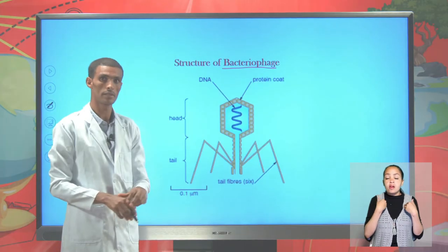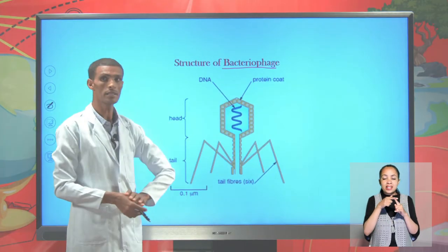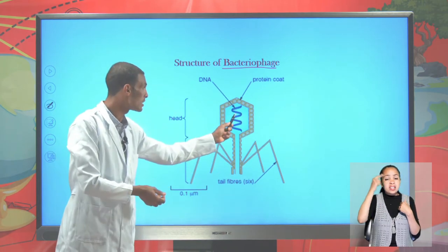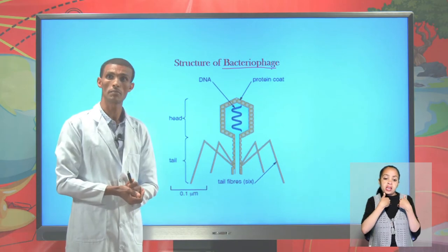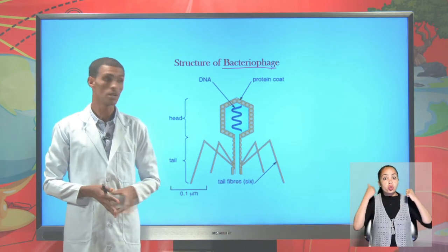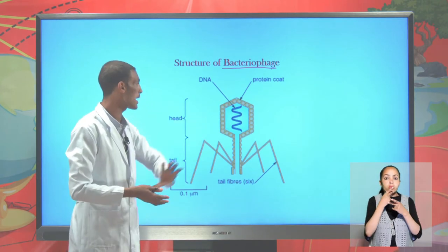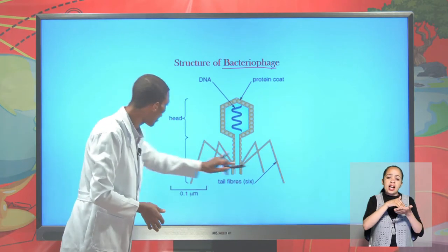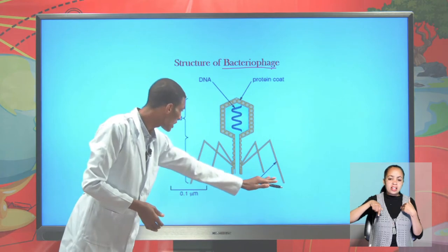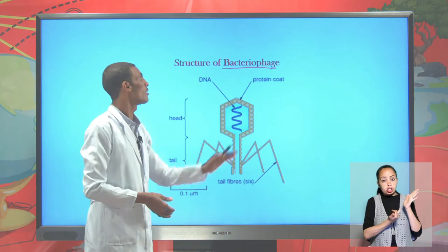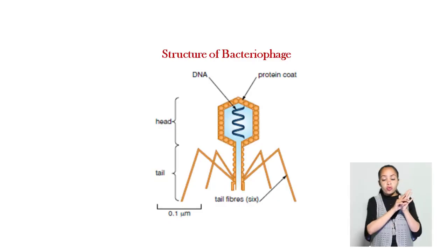Bacteriophage can have two sides. There is a head region and a tail region. Over the tail region it contains genetic material, and there is also a protein coat. There are tail fibers — about six fibers can be found here. This is the structure of a bacteriophage, or a virus that infects bacteria. It is a highly stable one.